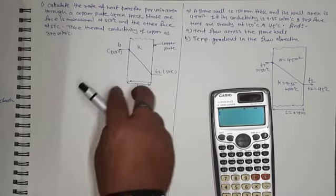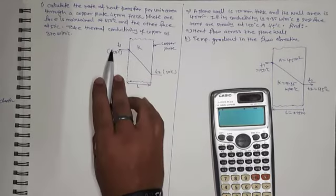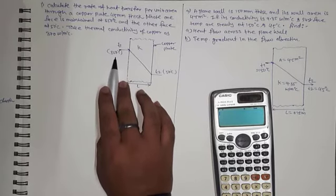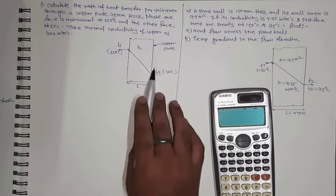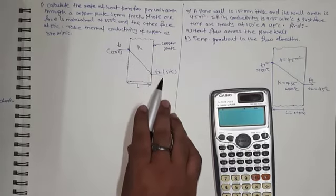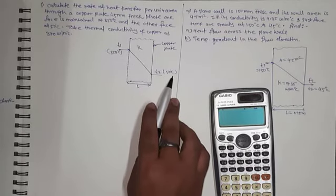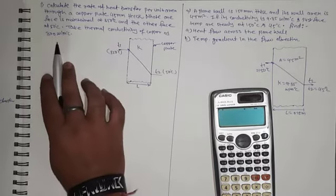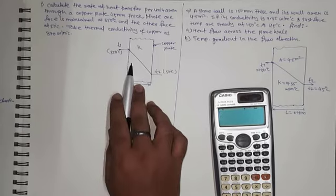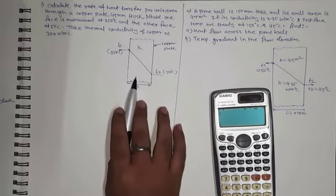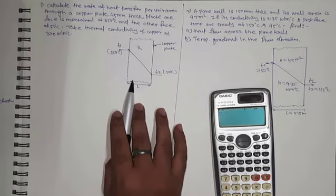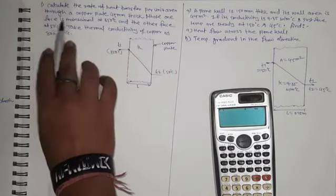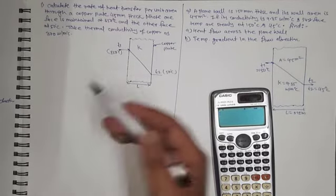A copper plate is given. The temperature of one face of the copper plate is 350 degrees Celsius and the other face of the copper plate is at 50 degrees Celsius. The thermal conductivity of this copper material is 370 watt per meter Kelvin and the thickness of this copper plate is 45 mm. We need to calculate the rate of heat transfer per unit area flowing through the copper plate.